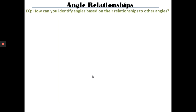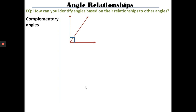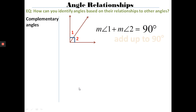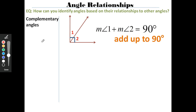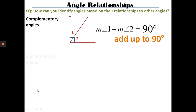Our purpose today is to identify angles based on their relationships to other angles. The first is complementary angles — that happens when you have two angles that both add up to 90 degrees. If you have a 90-degree angle cut into two separate angles, when you put them back together they add up to 90 degrees. The definition: complementary angles add up to 90 degrees.